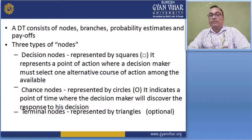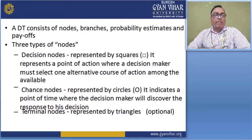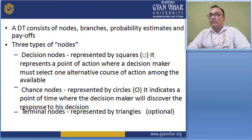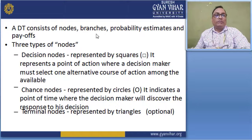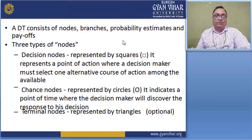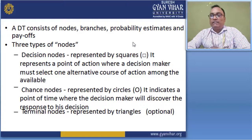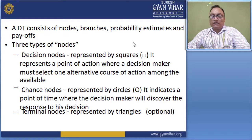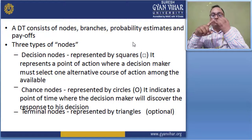A decision tree consists of different types of elements: nodes, branches, probability estimates, and payoffs. There are three types of nodes: decision nodes, chance nodes, and terminal nodes.